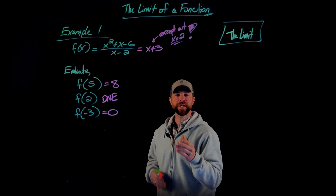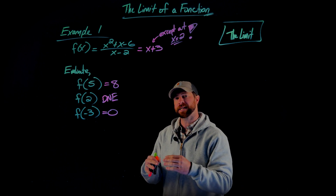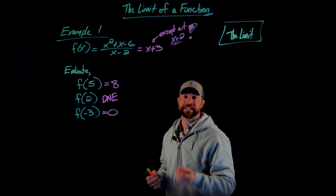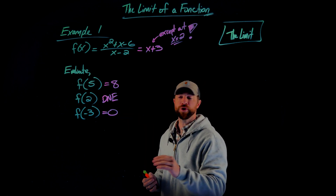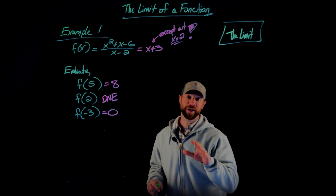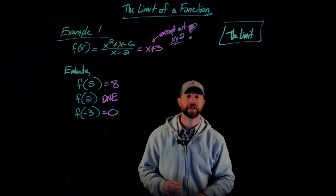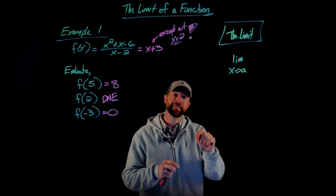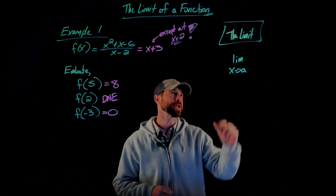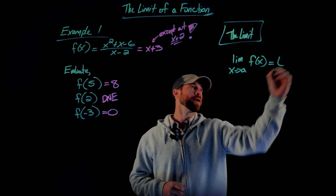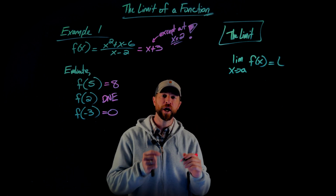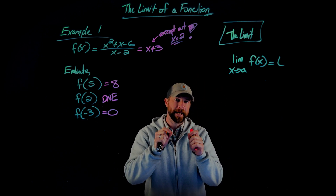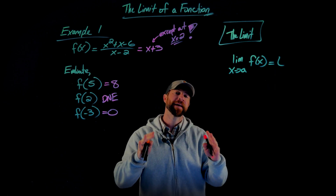Specifically, a limit tells you how the function acts around a certain x value. The notation looks like this: limit as x approaches a of f of x equals L, where a is a constant that the input is approaching. What this statement says is that if you plug in values for x near a — not specifically a itself, but numbers very close to a — the function outputs values very near the value of L.